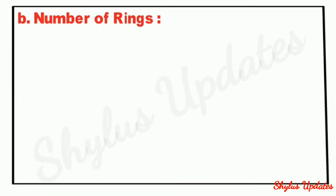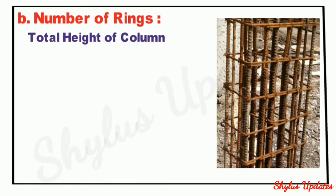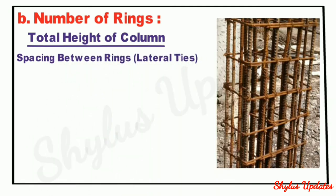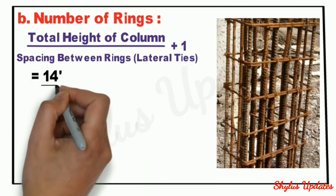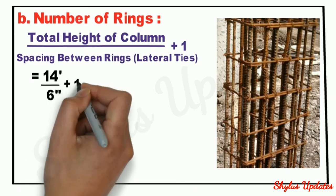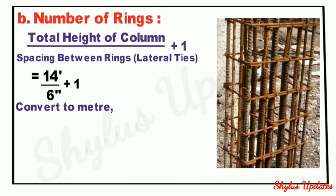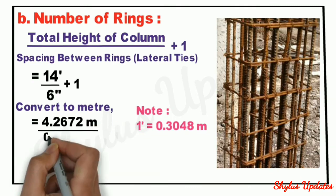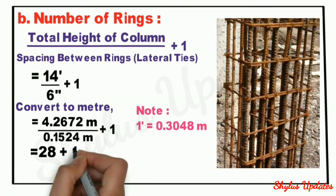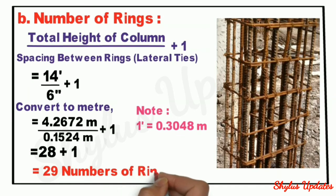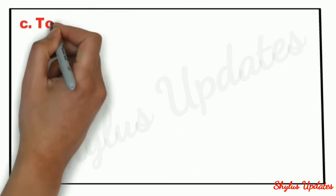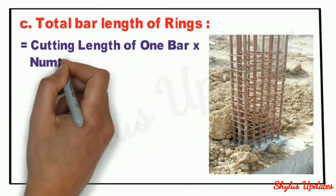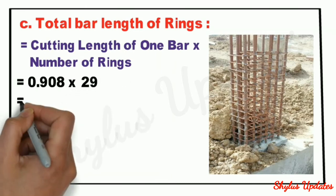Number of rings: the formula is total height of column divided by spacing between rings plus 1, equal to 14 feet divided by 6 inches plus 1. Converting to meters — 1 foot equals 0.3048m — we get 29 number of rings. Total bar length of rings equals cutting length of 1 bar into number of rings, giving 26.332 meters.